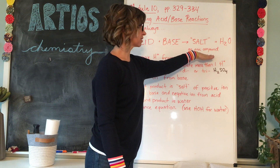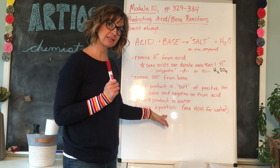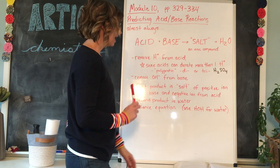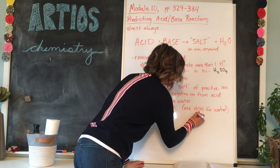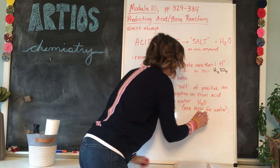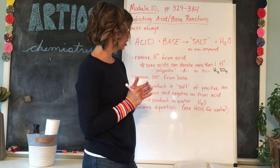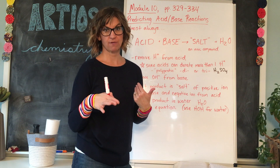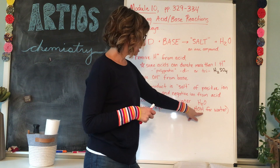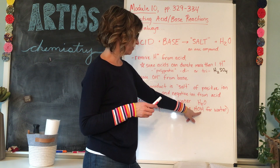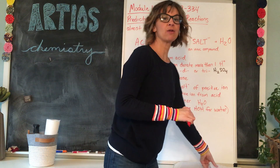Your second product is water. Once you have predicted your products, remember to balance the equation. Here's a little hint: because balancing can get tricky, I like to write HOH for water. HOH is really the same as H₂O, just written differently, and you're allowed to do that. You can always switch it later in your final answer, but it's very handy to keep the hydroxide ion visible when balancing.